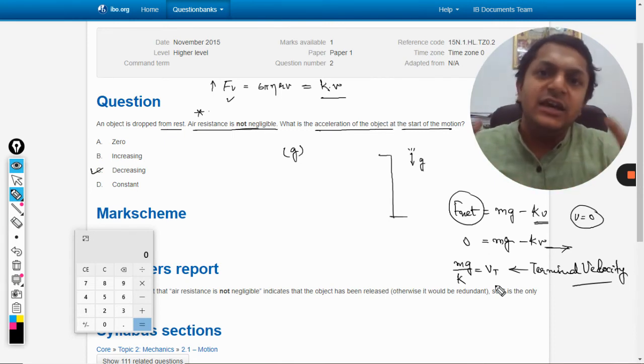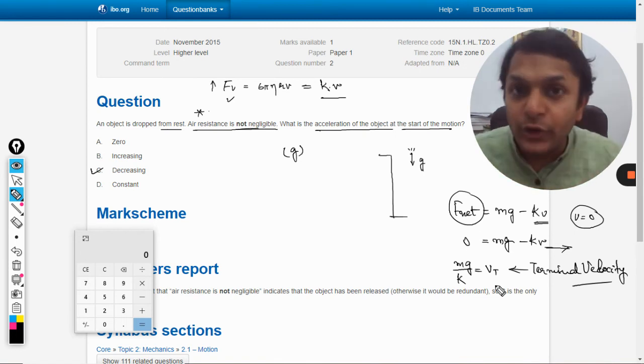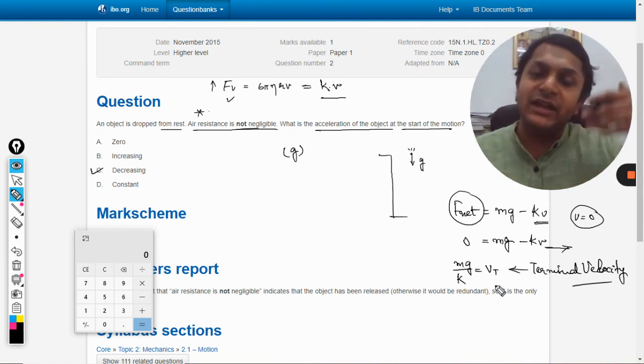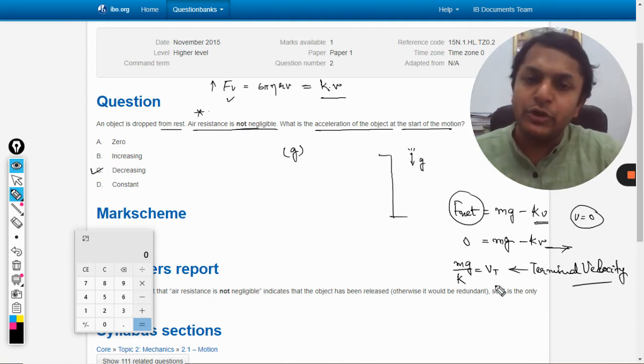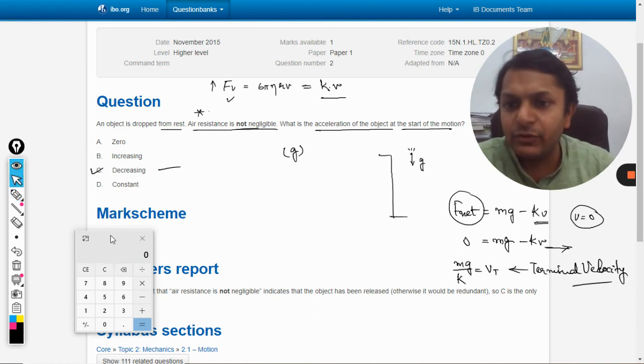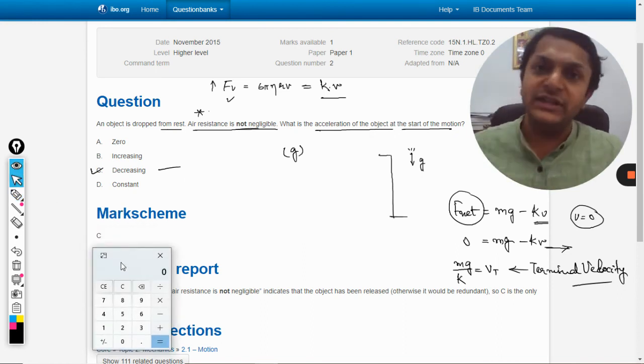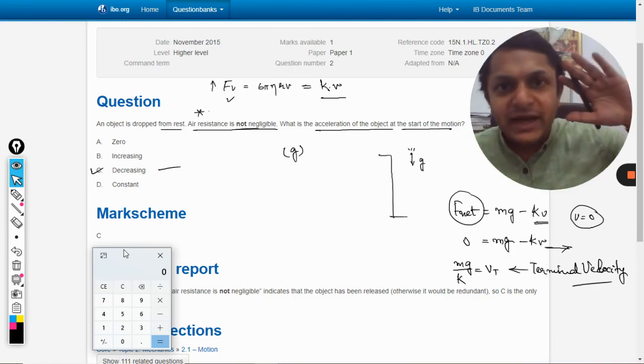This is never going to happen without air resistance - it is happening because there is a viscous force acting upon the ball in the upward direction. So our answer should be C, and let us see it from the mark scheme. Absolutely, the answer is C. So with this, all the best, bye.